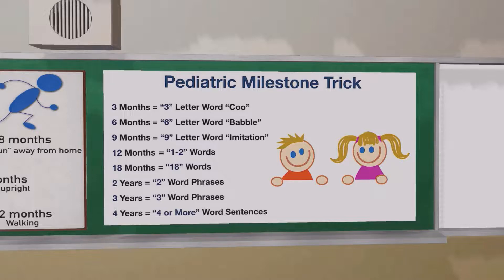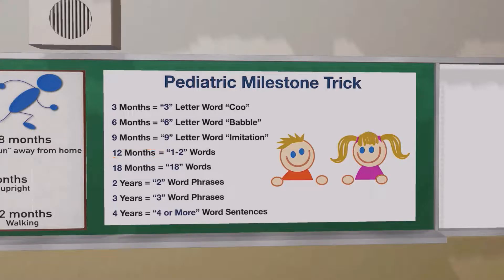At nine months, they're doing the nine-letter word: imitation. They begin imitating their parents and siblings. This is also the age where they start to say "mama" and "dada." At 12 months of age, a child should be able to say one to two words — we remember this because 12 has "1-2" in it.